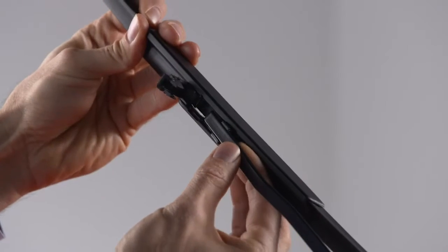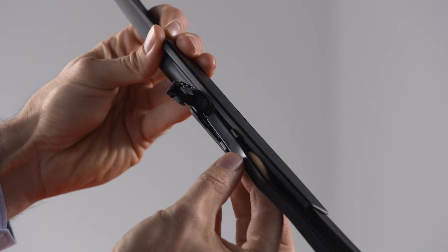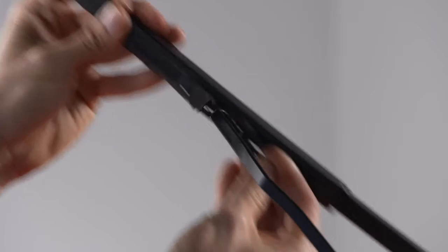Use one finger to push the release tab toward the wiper arm and keep it steady while using the other hand to push the blade away from the J-hook and toward the windshield.